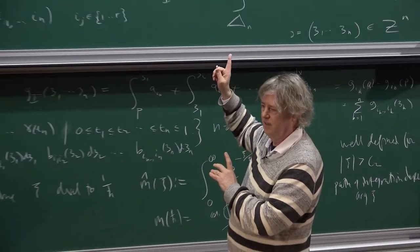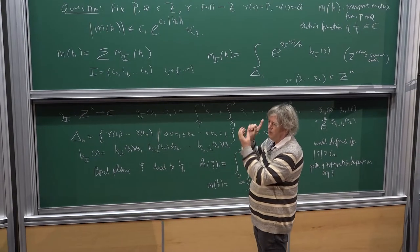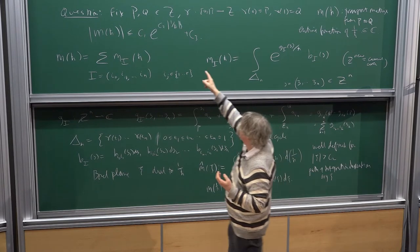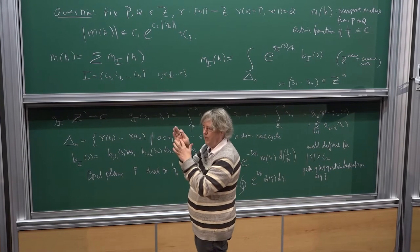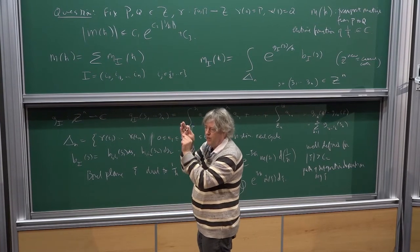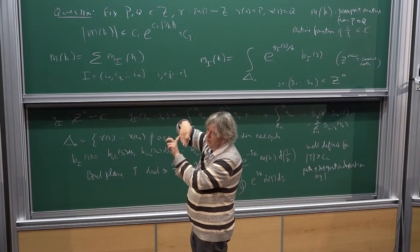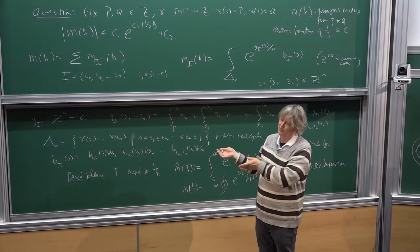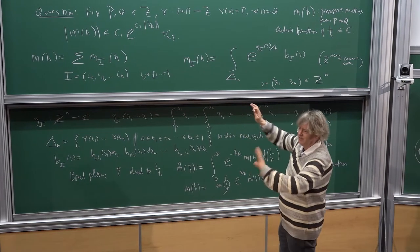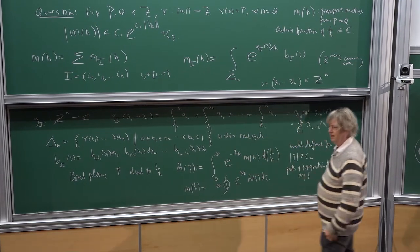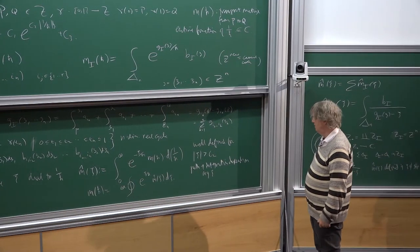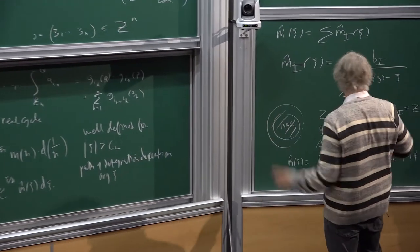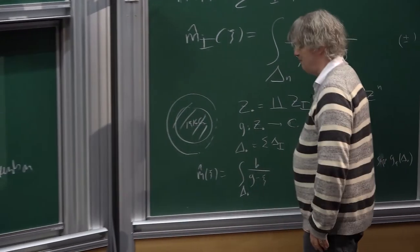If you introduce irregular singularities, then the direction of the Stokes lines depends on h-bar, so the irregular monodromy is not of this simple form of fixing two different points. In this case, we're talking about a compact Riemann surface — we don't have the irregular singularity question. This is maybe a little bit different from the combination of equational and co-equational resurgence in Professor Ecalle's talk.